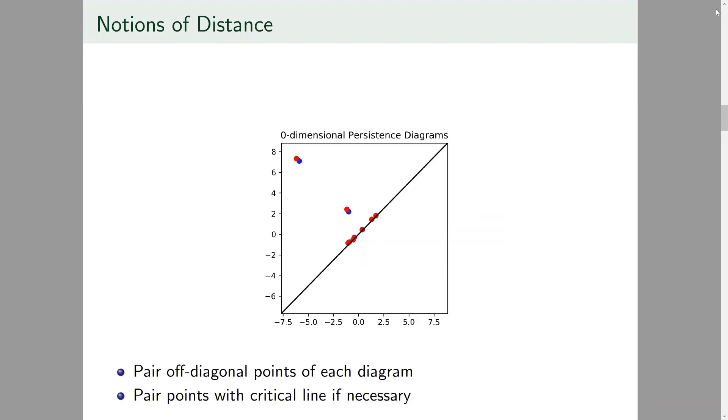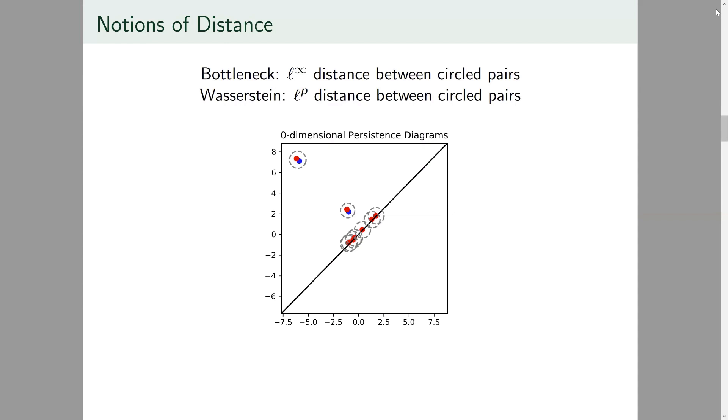In practice we calculate these distances by first overlaying two persistence diagrams. Here we have one in red and one in blue. Then choosing a hopefully optimal pairing of points close to each other on each diagram where off diagonal points representing critical pairs of cells added in the filtration to generate the kill cycles are allowed to pair with any unique point on the critical line. The bottleneck distance is then the L infinity distance between the strings of points paired on each diagram whereas the p-Wasserstein distance is the LP distance between these strings.